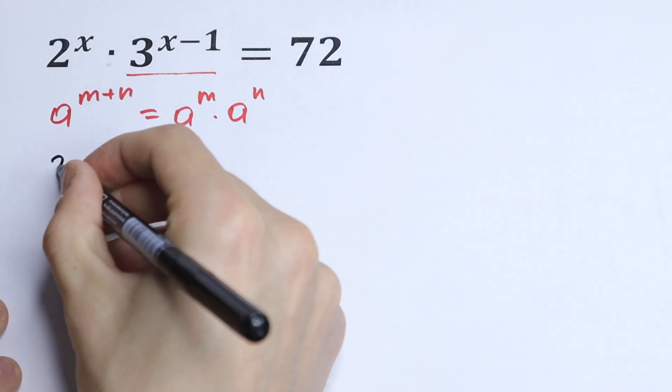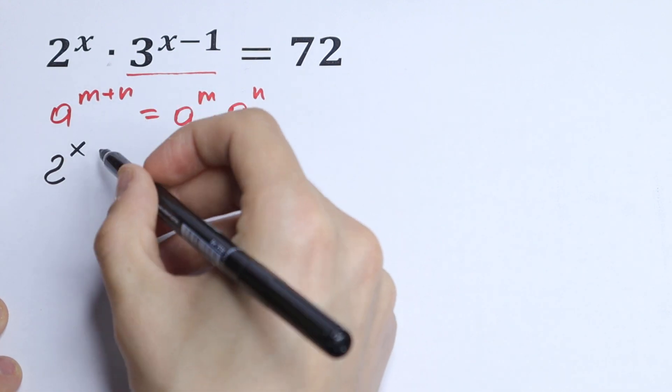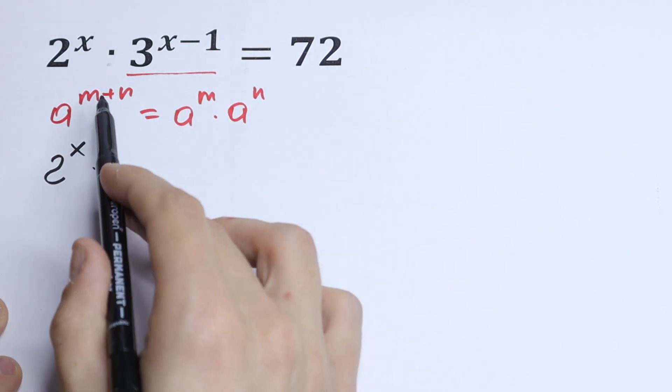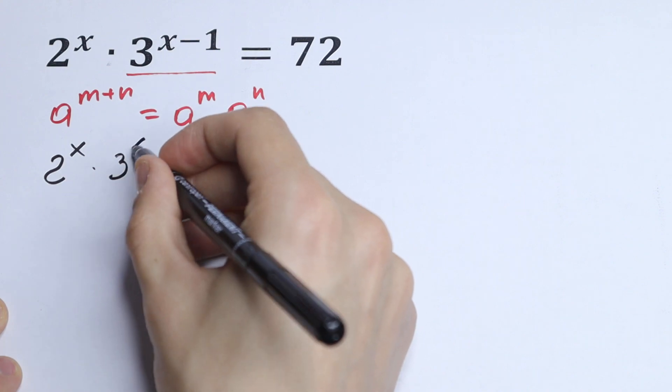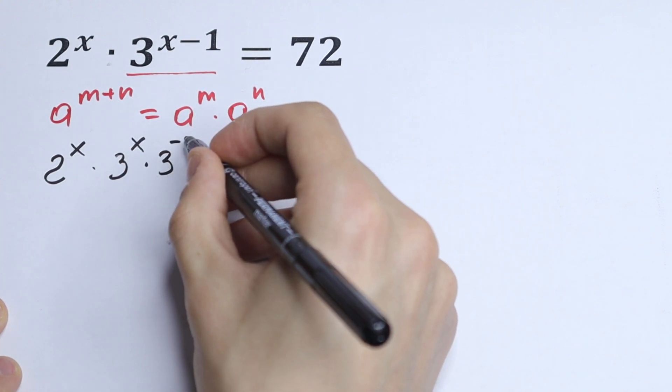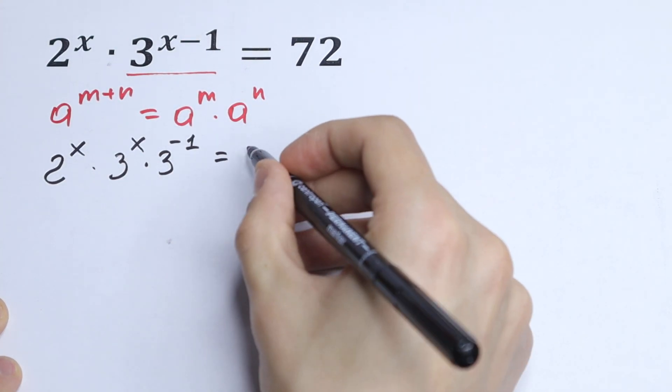How can we do this? Let's write this 2 to the power x right here, and right here we can write it using this rule. So we can write it as 3 to the power x times 3 to the minus 1 power equal to 72.